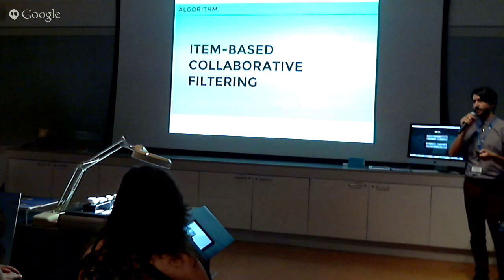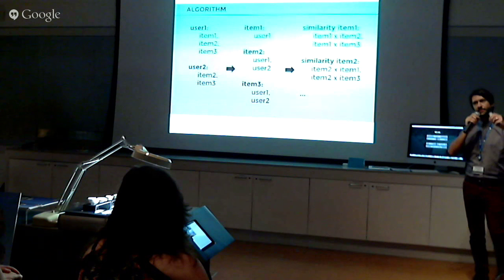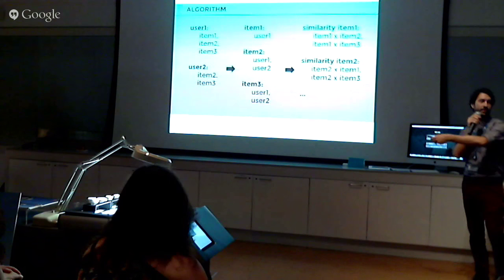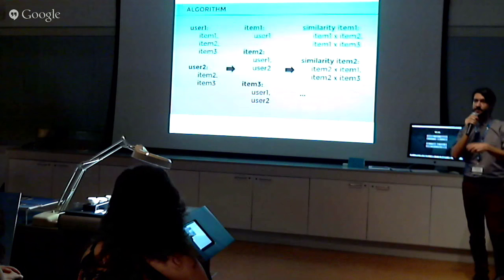Item-based collaborative filtering takes a list of users and the items they are interested in — because they saved it to their collection — then reverses that to a list of items and users who saved them, and compares those lists to find similar items. For example, if the same 10 people in this room like two specific projects, there's a big chance those two projects are very similar somehow.